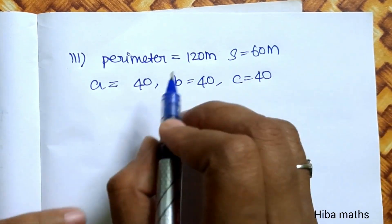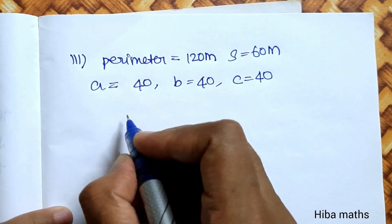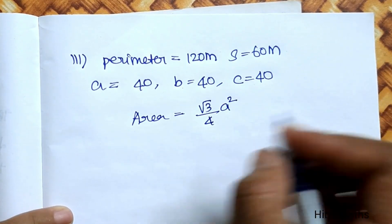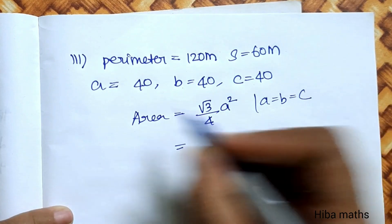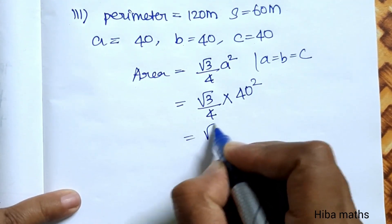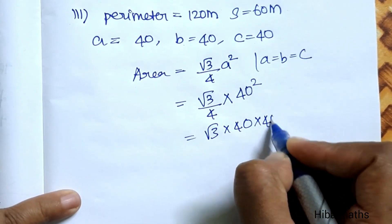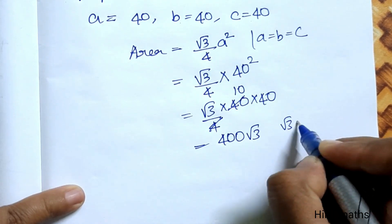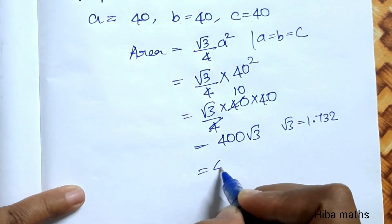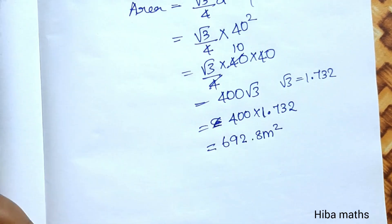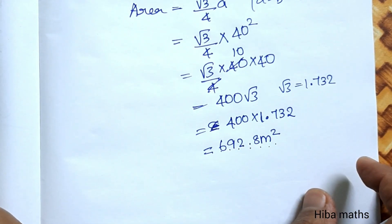For the third plot, A equals B equals C, so it is equilateral. Using the equilateral triangle area formula: root 3 by 4 times A squared, where A equals 40 meters. So the area equals (√3 / 4) × 40², which equals (√3 / 4) × 1600 equals 400√3. Since √3 equals 1.732, the area equals 400 × 1.732 equals 692.8 square meters. The last subdivision area is approximately 692.8 square meters.